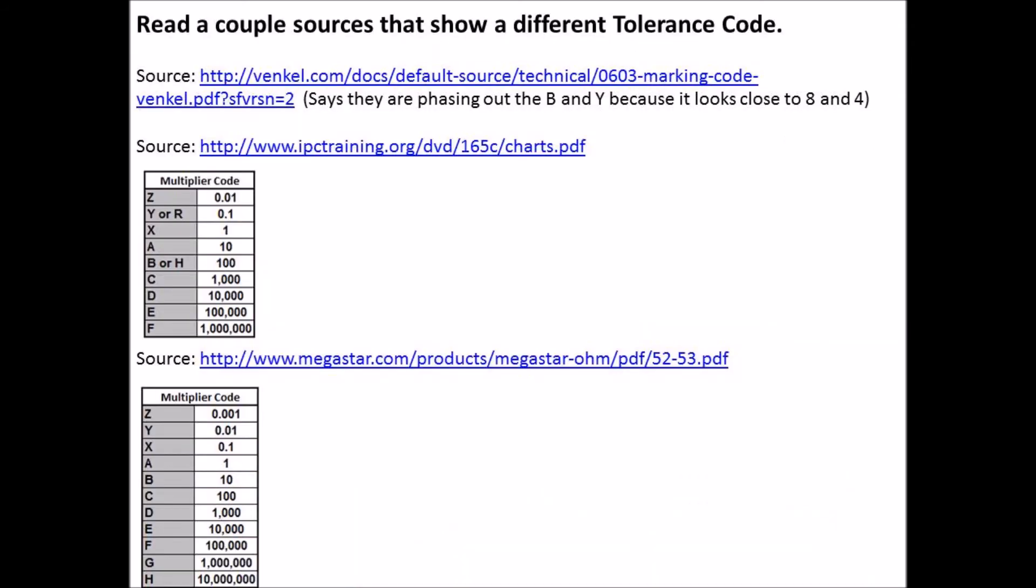All right, so I have a few other sites that showed something different than the normal. That top one there was showing that the letter B and letter Y for the multiplier codes was being phased out because they look too much like an 8 or a 4. And then that second one there showed the multiplier code being completely different, where the X was a 1 instead of the A.